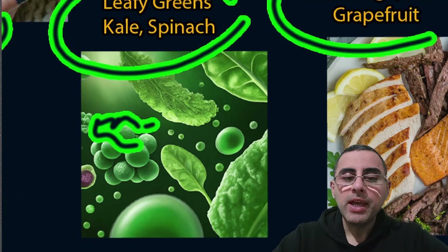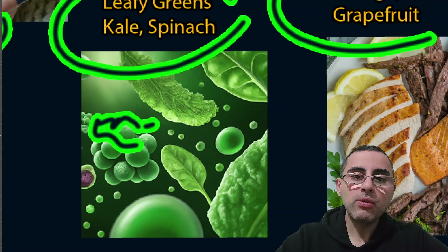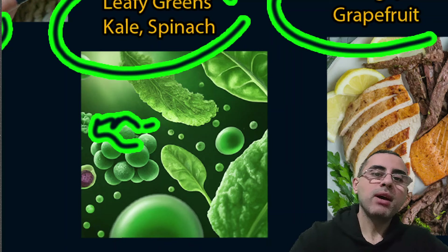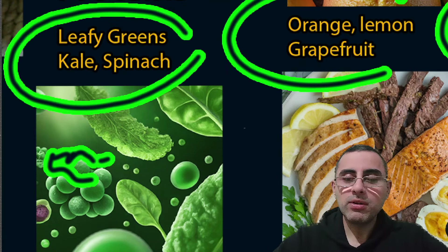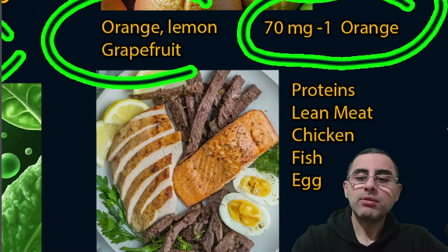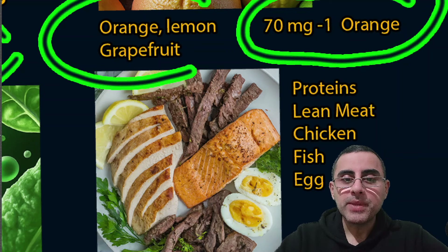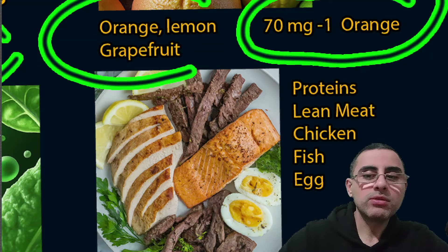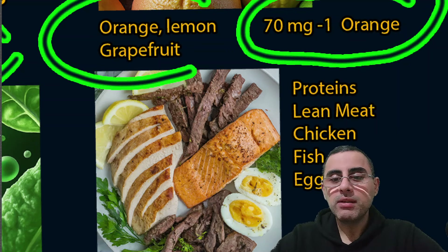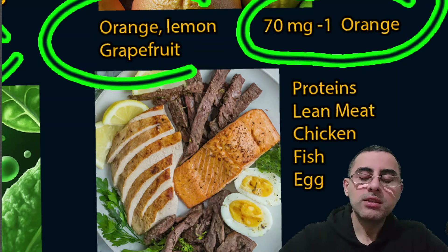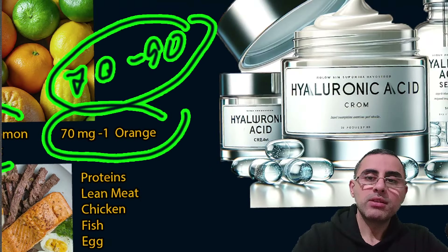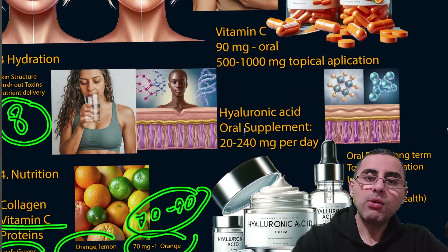Leafy greens like kale and spinach contain chlorophyll — the green component of these plants — and chlorophyll also stimulates production of collagen precursors, which is why leafy greens are important. Proteins are also essential for collagen production. The best sources of protein are lean meat, chicken, fish, and eggs.